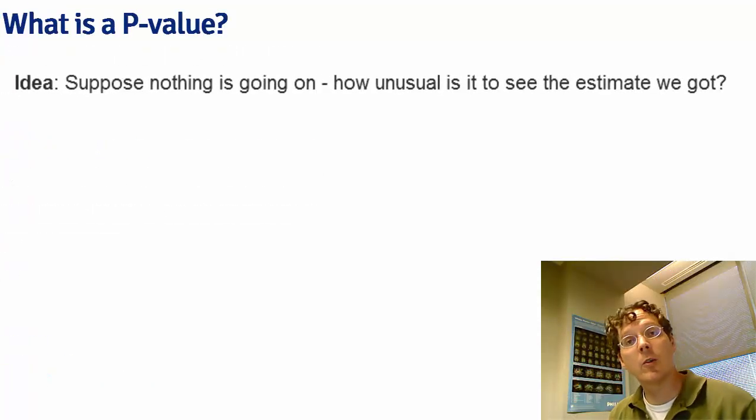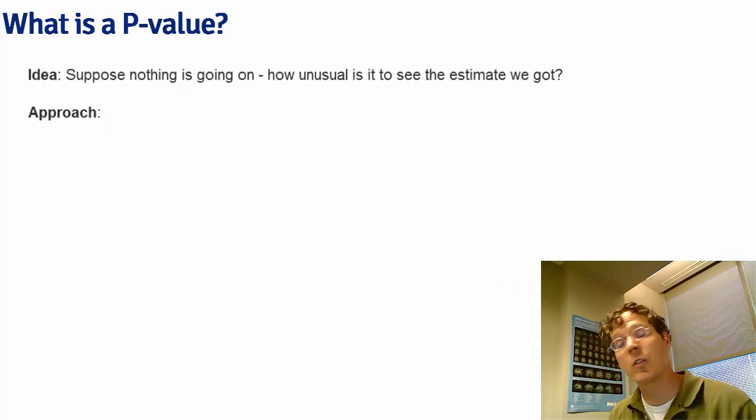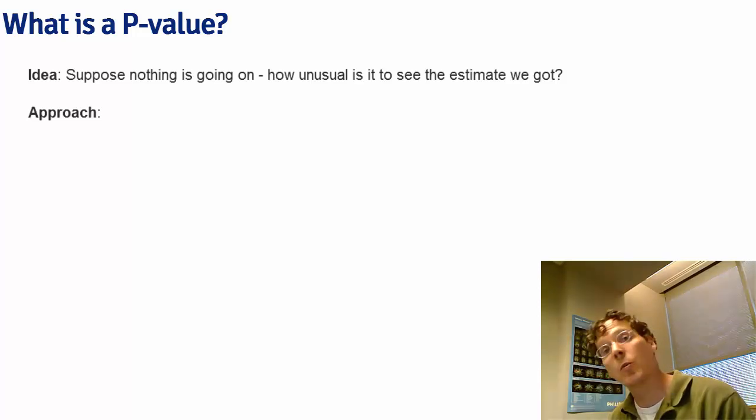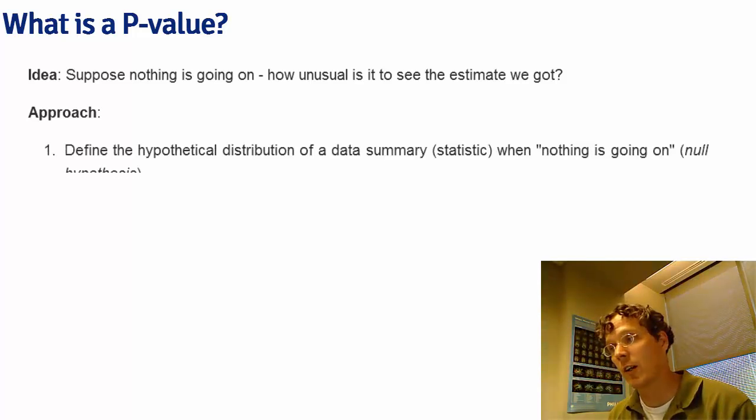The basic idea of a p-value is to start under the null hypothesis, assume that nothing is going on, and then calculate the probability of obtaining evidence as or more extreme than we actually obtained under this null hypothesis. Basically, how unusual is the result we got if the null hypothesis is true. Let's go through the approach through maybe three simple steps, and then we'll go through basic calculations in the next set of slides.